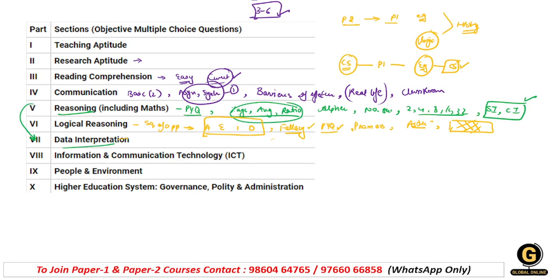Ek question yahan aaya tha Sushruta Samhita se - isko bhi detail mein already previous year questions ke saath discuss kar chuke hain. Ab aate hain ICT unit par - is unit se bhi kaafi zyada repeated questions is baar phir NTA ne puche the. Pehla question aaya tha memory se. Memory based question zaroor aata hai - jismein aap logon ko RAM ROM padhkar jaana hai. RAM ROM ki full form pata honi chahiye, read only kaun sa hota hai, write only kaun sa hota hai. CD aur DVD mein se kaun si memory volatile hoti hai, kaun si non-volatile hoti hai - yeh padhkar jaana hai.